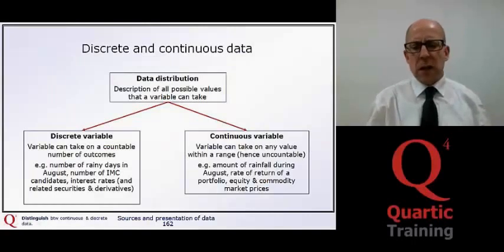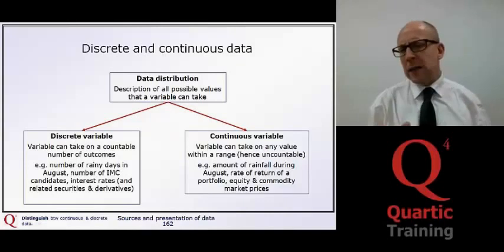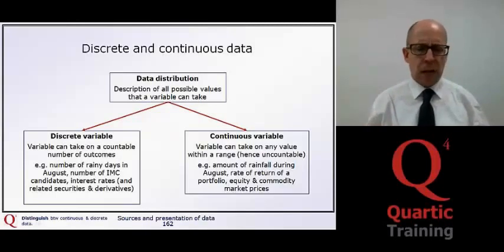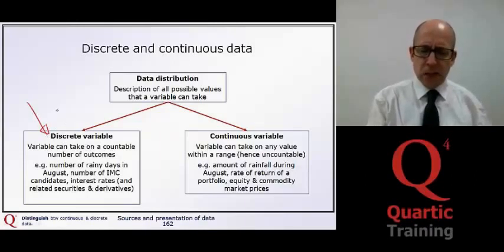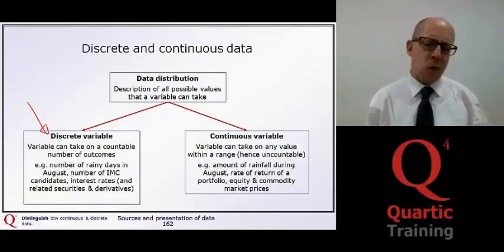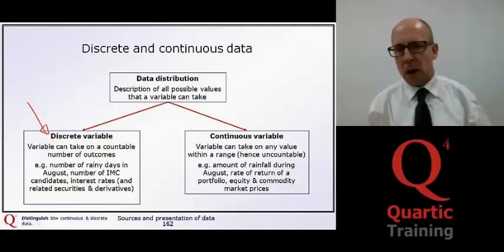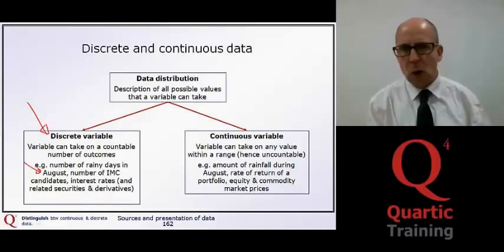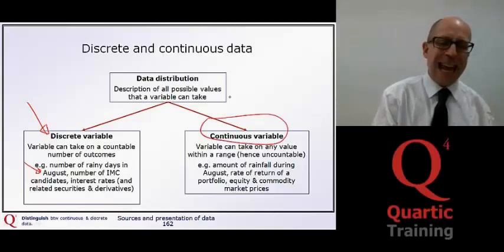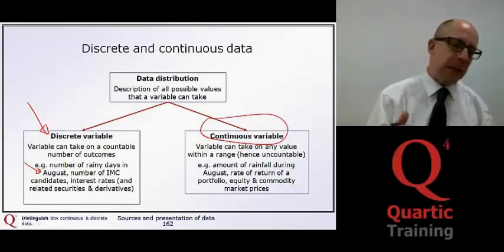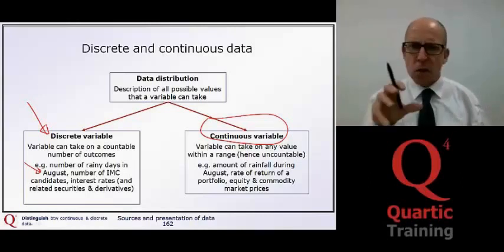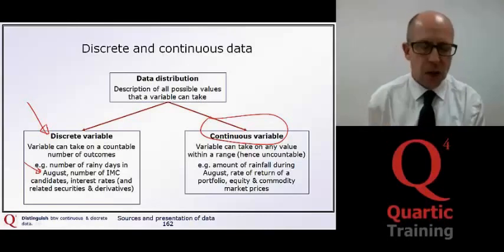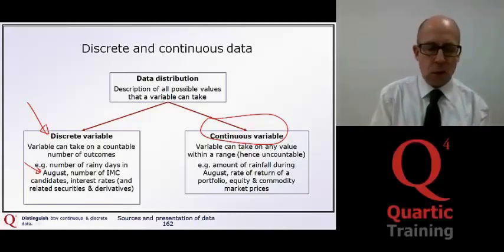In terms of data distribution, there's really two principal types here. What we're trying to describe with a data distribution model is really describing all of the possible values that a variable can take. The two different types: firstly, a discrete variable. This is where a variable can take on a countable number of outcomes. For example, you could count the number of rainy days in August. It would be a discrete number, 15 or 12. A continuous variable can take any value. This would actually be the amount in millimetres, for example, of rainfall that you get in August. It's not going to be a discrete number of days, from 1 through to 31. It actually could take any value of millimetres of rainwater through that time.